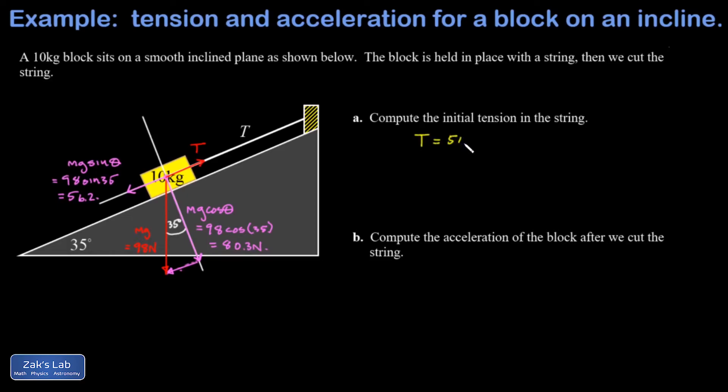In part B we cut the string and the block begins to slide down the ramp. So this tension force is gone and the only force acting parallel to the surface is now this 56.2 newton force pulling down the ramp. So we can apply Newton's second law in this parallel direction and say that a equals f over m.